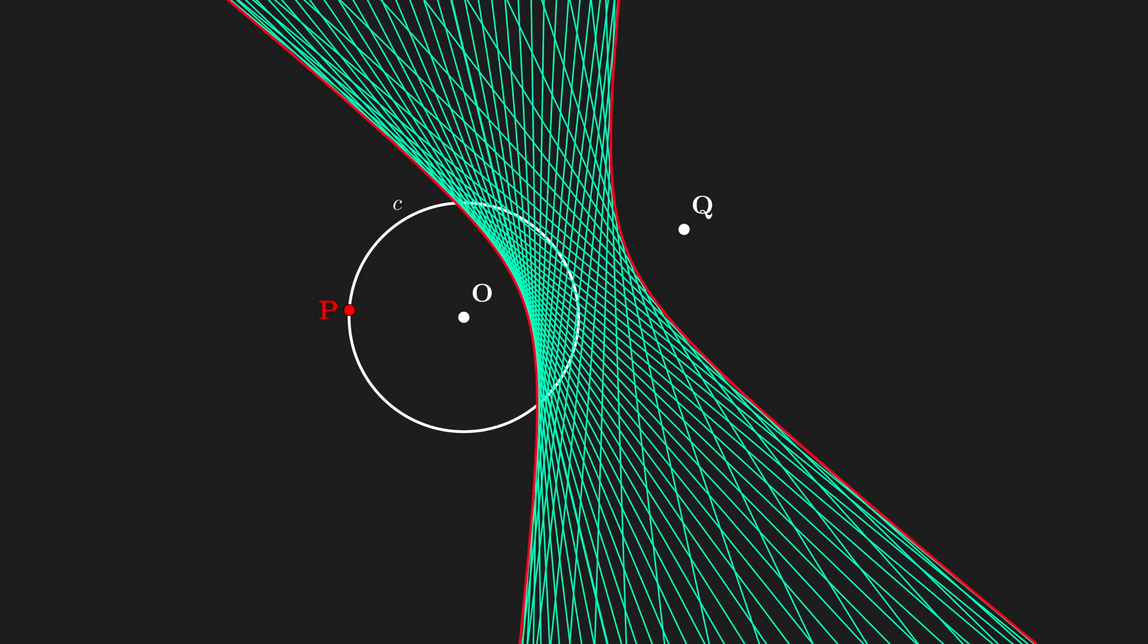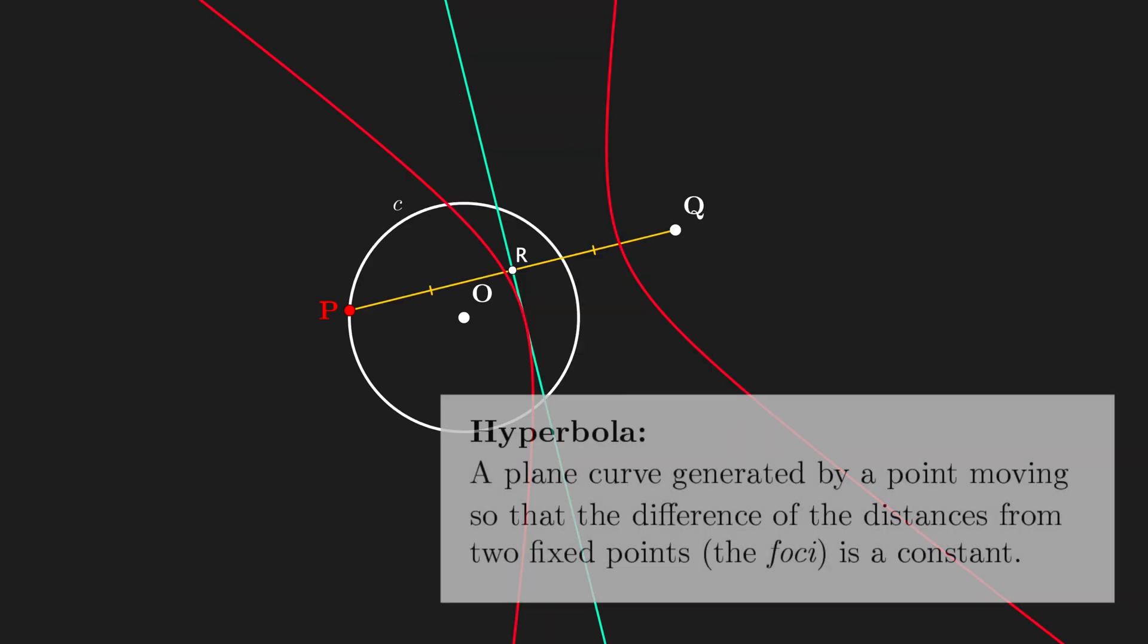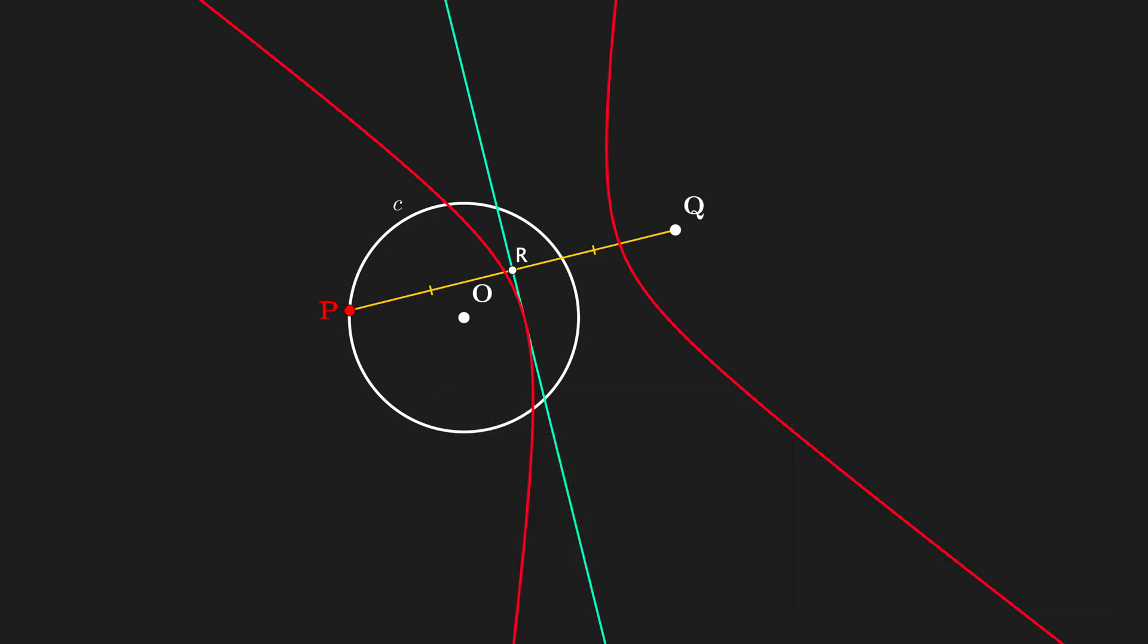A hyperbola is a planar curve generated by a point moving so that the difference of the distance from two fixed points is a constant. In this particular case, the foci are O and Q. We just need to find the point that generates the hyperbola, which you can find by drawing the auxiliary line passing through the center O and the point P.